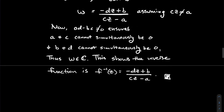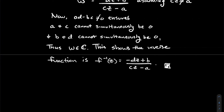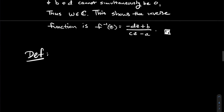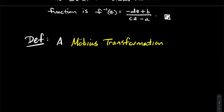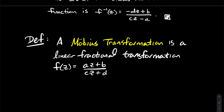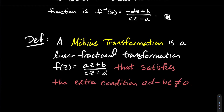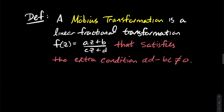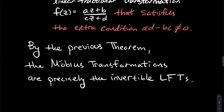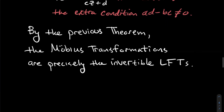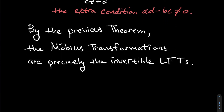That finishes the proof that the LFT has an inverse when ad - bc ≠ 0. This leads to the following definition: a Möbius transformation is a linear fractional transformation (az + b)/(cz + d) that satisfies the extra condition ad - bc ≠ 0. So Möbius transformations are precisely the invertible linear fractional transformations.